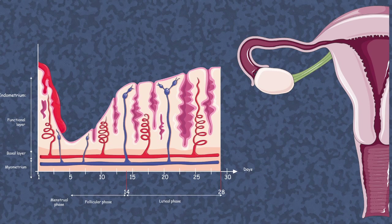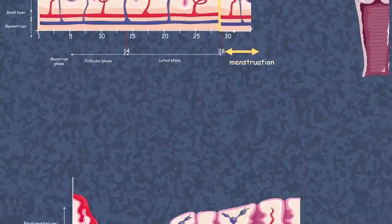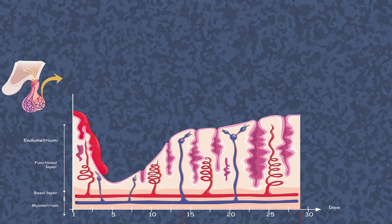If fertilization doesn't take place, then after 28 days there would again be a cycle of menstrual flow — the endometrial lining would break down and be ejected as a flow of blood. This cycle of endometrial growth, oocyte secretion, and endometrial shedding is known as the menstrual cycle. The events of the menstrual cycle are twofold: the follicular phase and the luteal phase. In the follicular phase, development of the follicles is augmented by hormones secreted from the pituitary gland, such as follicle stimulating hormone (FSH) and luteinizing hormone (LH).